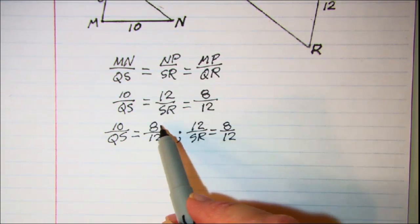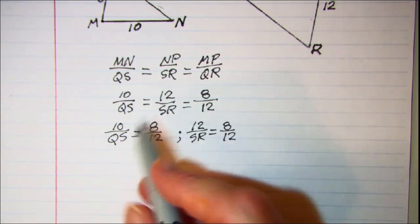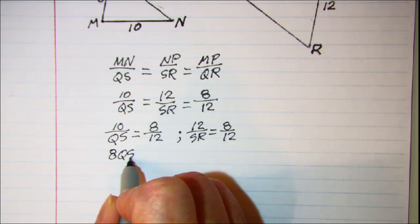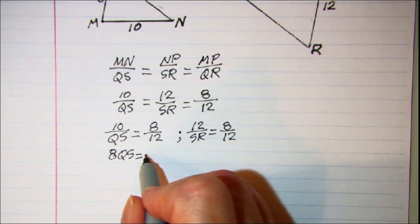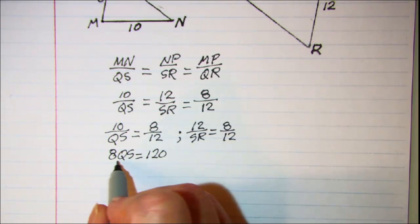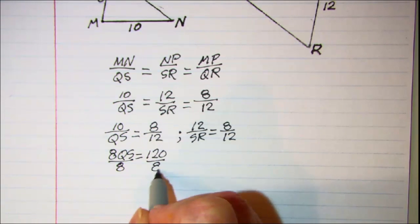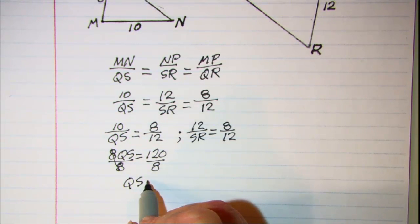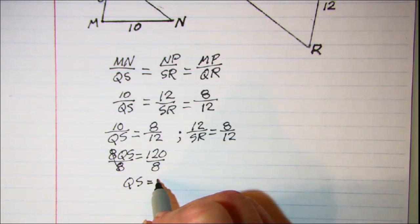Now cross multiplying here we get 8 times QS is equal to 120. Divide both sides by 8, these will cancel, and QS is equal to 15.